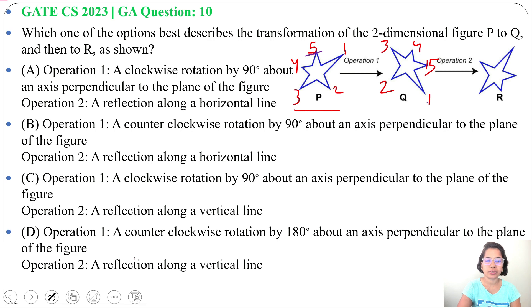In option A, operation 1: a clockwise rotation of 90 degrees about an axis perpendicular to the plane of the figure. This is correct. Next option B, operation 1: a counterclockwise. Counterclockwise means opposite. So due to this, option B is wrong.